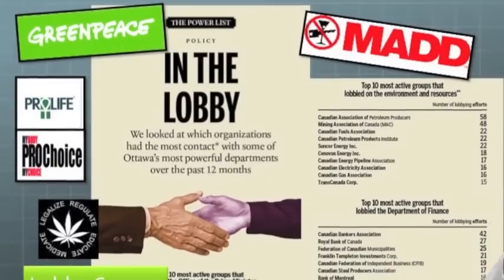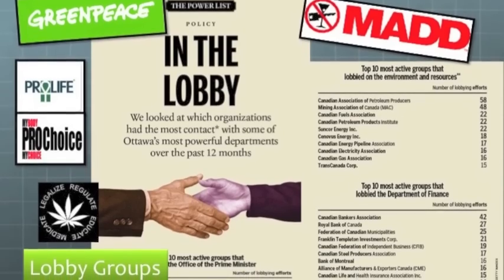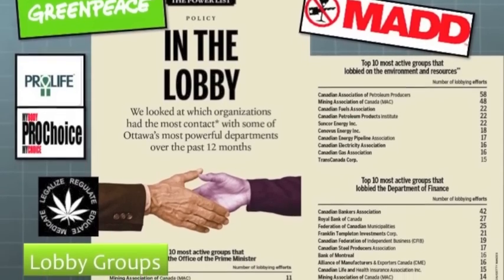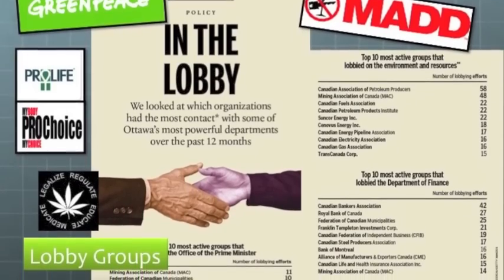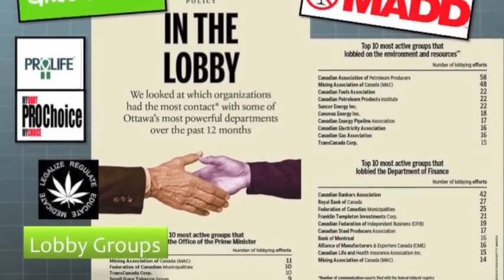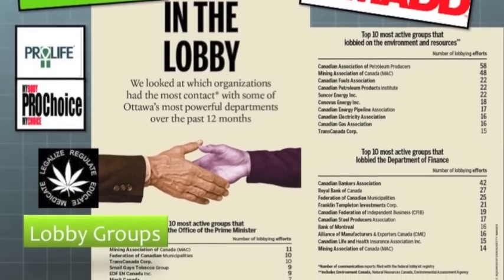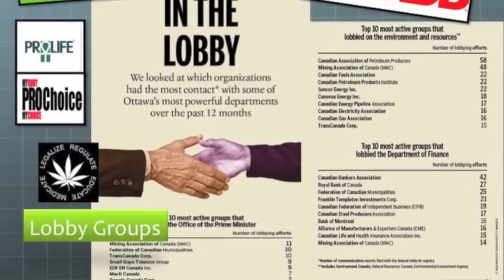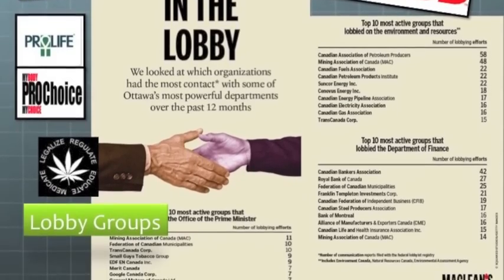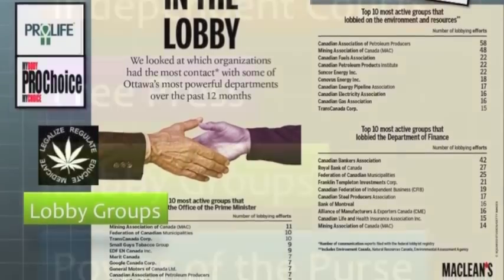Lobby groups also work to influence the government. In a nutshell, they get together and try to convince the government to pass laws that the members of their group support. Lobby groups are one way we can influence the government and also make sure that the government is listening to the wishes of the people.